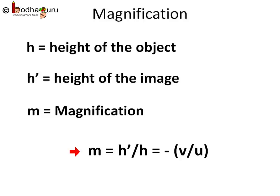Then m is equal to the height of the image formed h' divided by the height of the object h, and it is also equal to minus times image distance v divided by object distance u. So m = h'/h = -v/u.